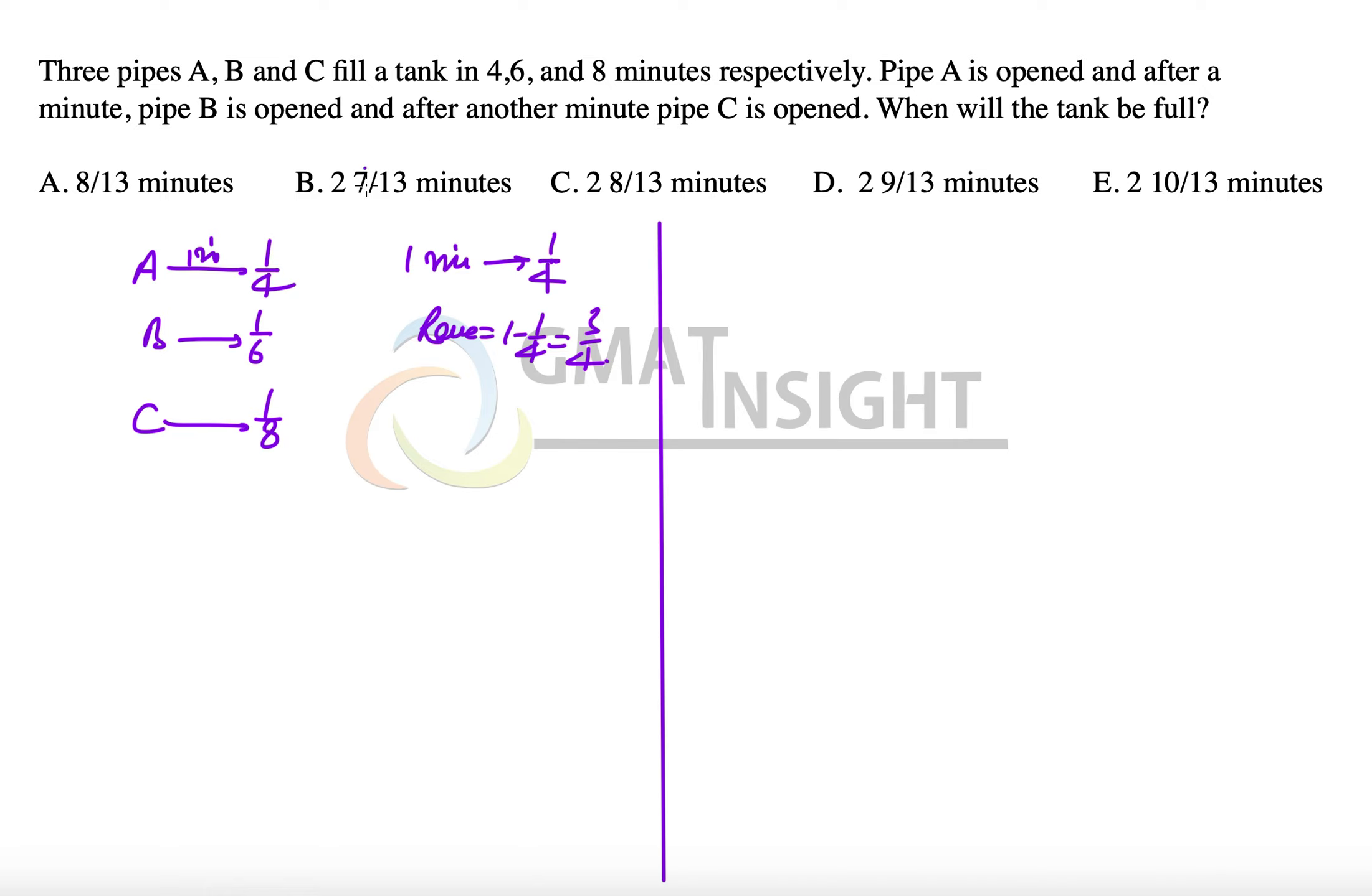Now the question says that B pipe is opened. So A plus B's one minute work will be equal to 1/4 plus 1/6, which is equal to 5/12. That means in the second minute, the work done is equal to 5/12.